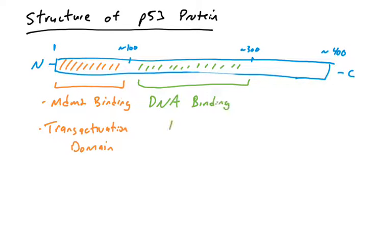The center 200 amino acids — around amino acids 100 to 300 — is the DNA binding domain of p53. The three-dimensional structure when p53 folds allows this region to interact with specific nucleotides in promoters, enabling p53 to land on those promoters, bind to them, and transactivate p53 target genes.